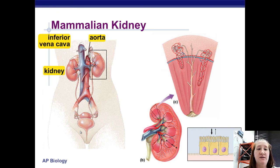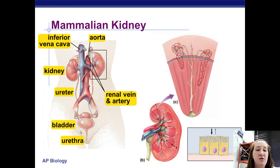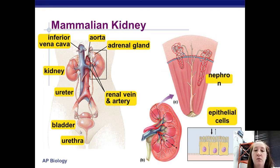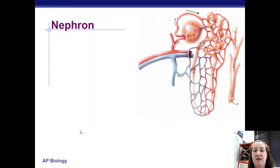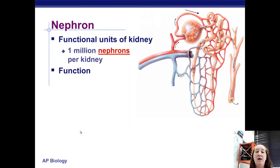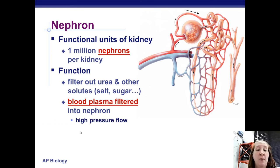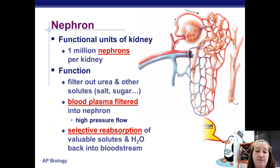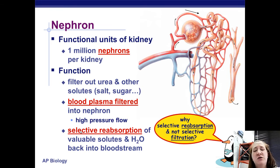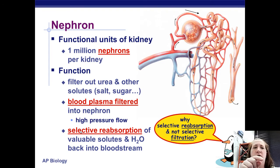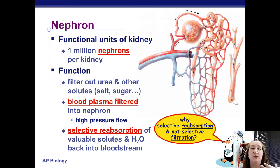One kidney has a million nephrons — it filters things out of the blood, reabsorbs good things, and gets urine ready to leave the body. The nephron selectively reabsorbs rather than selectively filters because it's easier to push everything out and then let back in only what you want, rather than selectively allowing things through one by one. This provides greater flexibility and control.